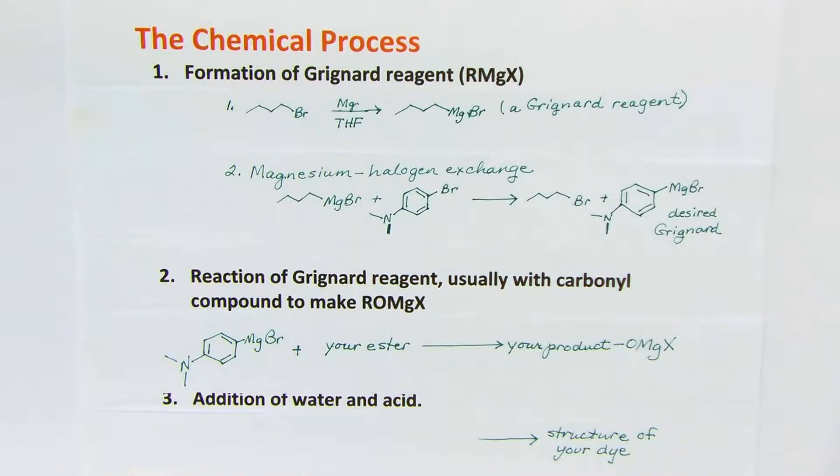In the final step of the reaction we are doing, the acid causes a reaction beyond the usual Grignard product. So the structure ends up as your dye structure as opposed to the regular alcohol of a Grignard.